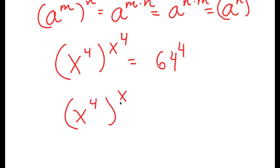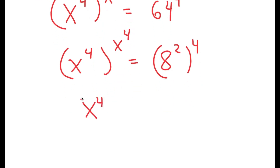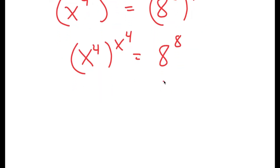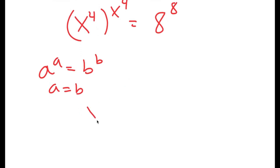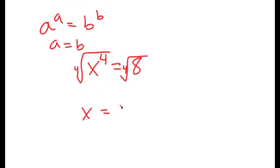Now, 64 to the power of 4 I can rewrite as 8 squared to the power of 4, which turns into 8 to the power of 8. Now if I have something in the form a to the power of a is equal to b to the power of b, this means that a equals b. So in this case, x to the power of 4 is equal to 8. And to solve for x, I'm going to take the fourth root on both sides, so I get x is equal to positive or negative fourth root of 8.